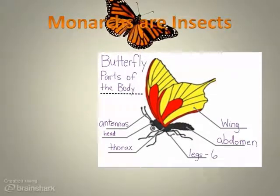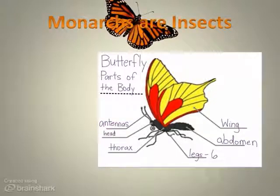Butterflies are part of the animal group known as insects. There are over 10 quintillion insects in the world. Did you know if you weighed all the insects in the world, they would weigh more than all the humans? That's a lot of bugs.